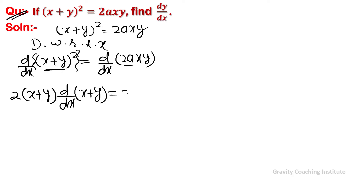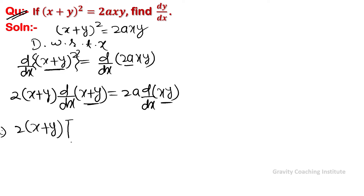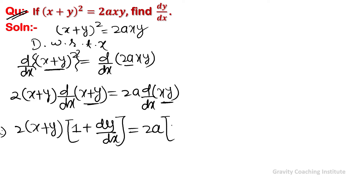2a is a constant so we take it outside. For xy we apply the product rule. So 2(x + y) into (1 + dy/dx) equals 2a times [x · d/dx(y) + y · d/dx(x)], and d/dx(x) = 1.